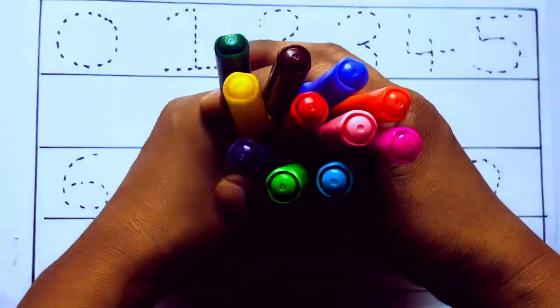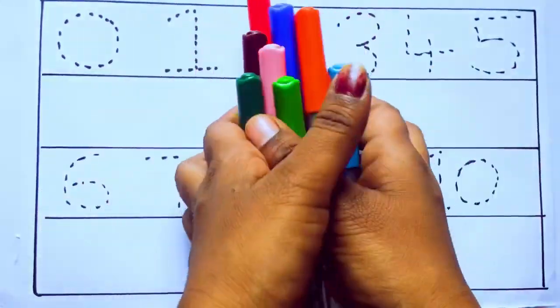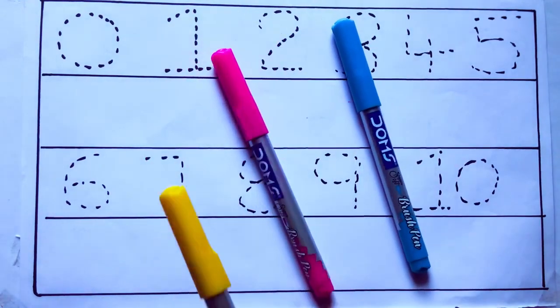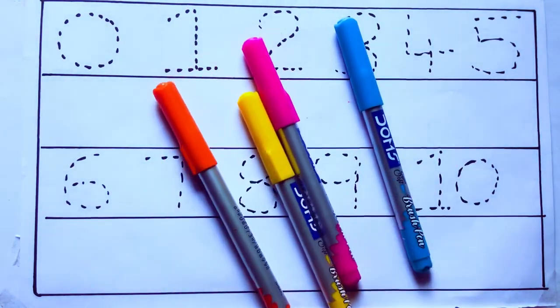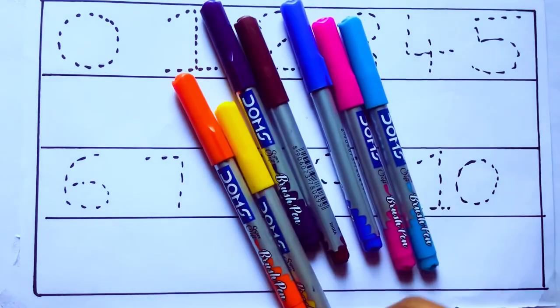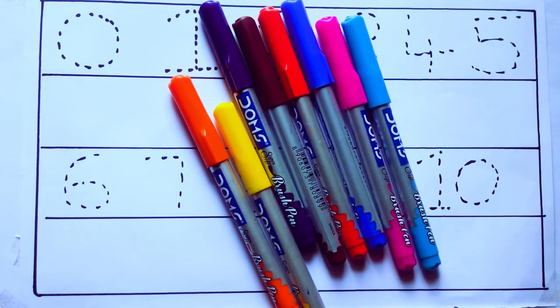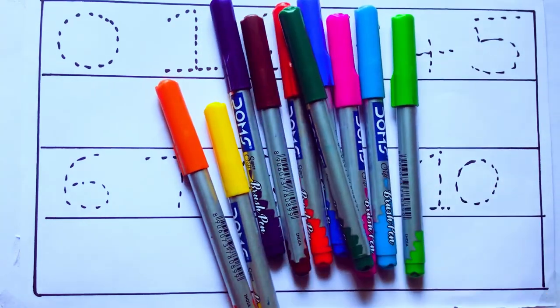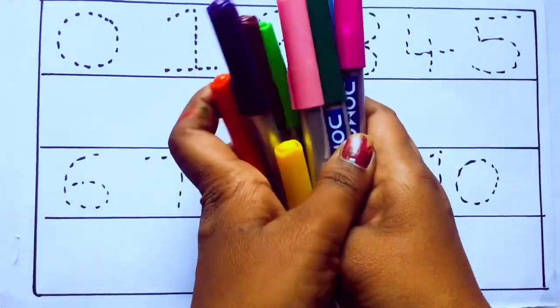Let's learn some colors. These are all the color pencils. Let's learn the names. Sky blue color, pink color, yellow color, orange color, violet color, blue color, brown color, red color, green color, and pink color.